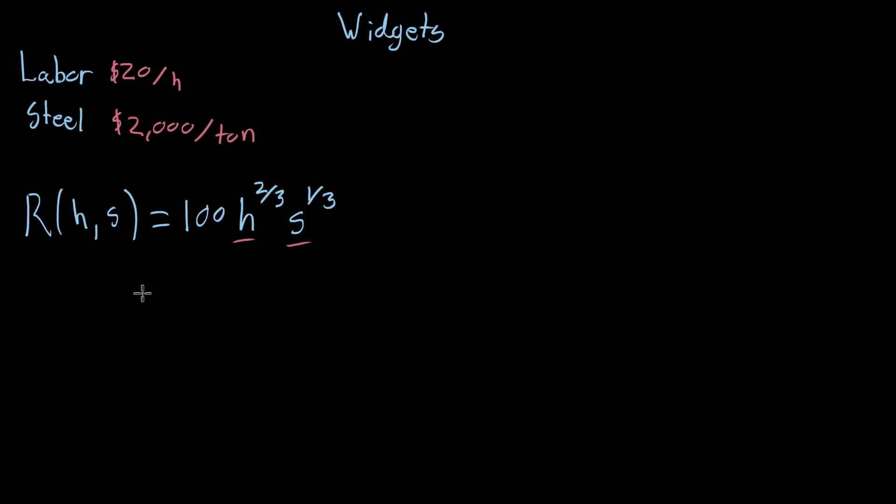And of course, you wanna earn as much as you can, but let's say you actually have a budget for how much you're able to spend on all these things, and your budget is $20,000. You're willing to spend $20,000, and you wanna make as much money as you can according to this model based on that.